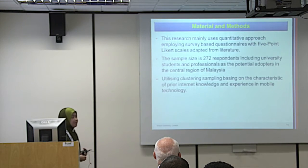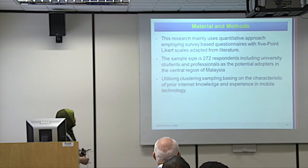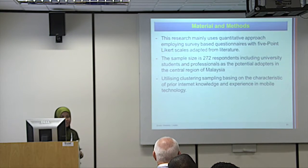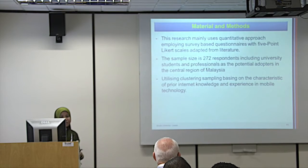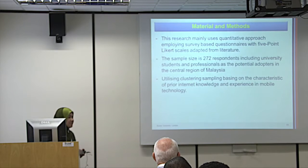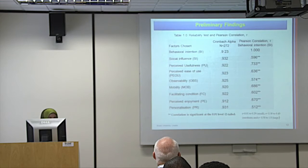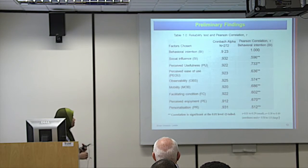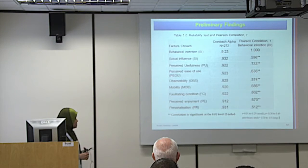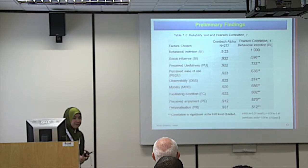Regarding materials and methods: this research uses a quantitative approach, employing a survey-based questionnaire with a 5-point Likert scale. Currently my sample is 272 respondents, comprising students and professionals as potential adopters in the central regions of Malaysia. I used cluster sampling based on their internet knowledge and experience in mobile technology. The Cronbach's alpha for the questionnaire — which should be above 0.70 — came out above 0.70 for all factors.